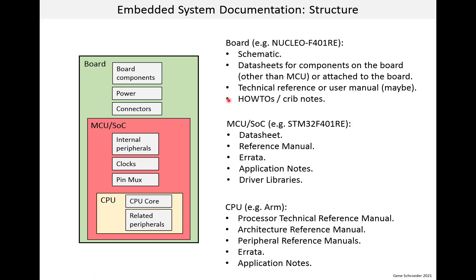Now let us move to the MCU or system on a chip level. At this point, the documentation is coming from an outside supplier and is perhaps more formal and consistent compared to internal board documentation. The two major documents are the data sheet and the reference manual — though it is possible these two documents are combined into one. The data sheet is for specific MCU part numbers, usually listed on the title page. It contains information that tends to be more physical, such as pin assignments, power and voltage levels, clock frequencies, the number of resources like memory, and the number of peripheral types like UARTs.